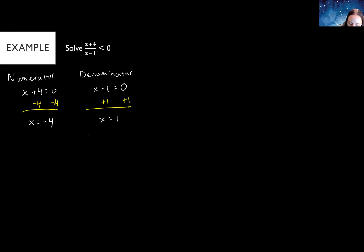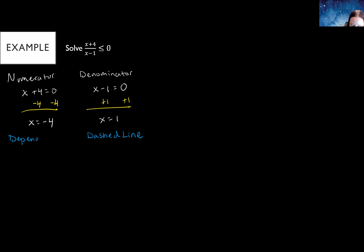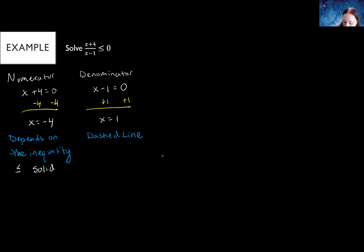The denominator is always going to have a dashed line, because we can never have zero in the denominator — x − 1 can't be zero because then we're dividing by zero. The numerator, whether it's a solid or dashed line, depends on the inequality symbol. We have a less than or equal to, and because it includes 'equal to,' it's going to be a solid line.